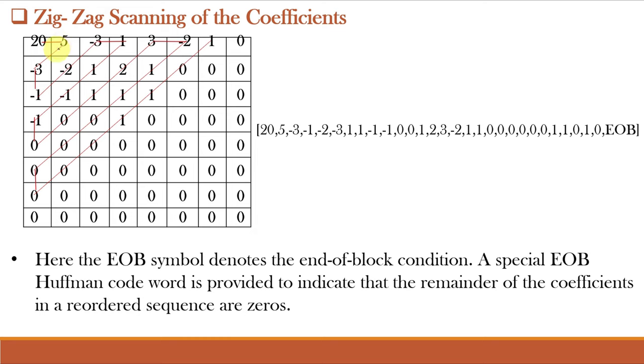The zigzag scanning of the coefficients is done because the order of frequency components are from low to high in a zigzag manner. And it also produces maximum series of 0s at the end. The first component is the DC component having average intensity value and all other components are AC components.